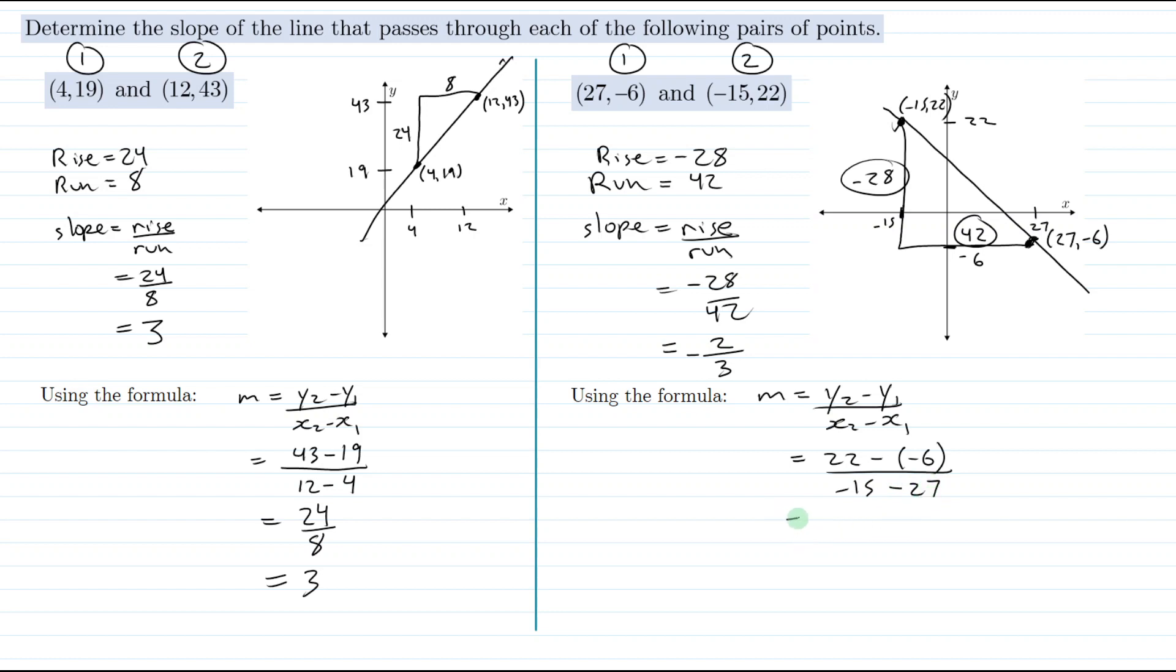And 22 minus -6, well that's the same as 22 plus 6, so that's 28. And -15 minus 27 is -42. We can reduce this fraction again. 28 and 42 are both divisible by 14, the largest number that goes evenly into both. So 28 divided by 14 is 2, 42 divided by 14 is 3. And we had a positive divided by a negative, so again we get our negative slope of -2/3.